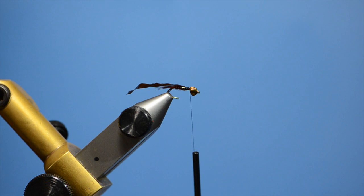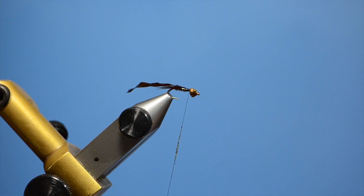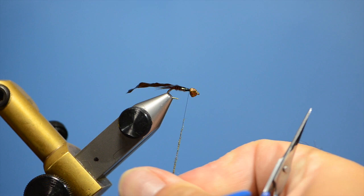Now we need some ice dub in peacock. We are going to dub this on fairly thin. We are going to lay a foundation for the thorax before we lay our rubber legs in. Hairline has a new product. If you are familiar with the grizzly flutter legs, now they have a micro.